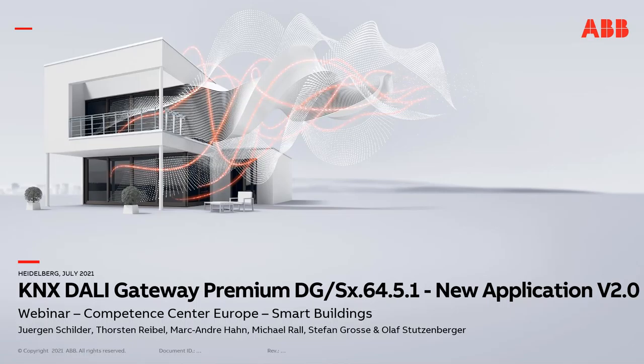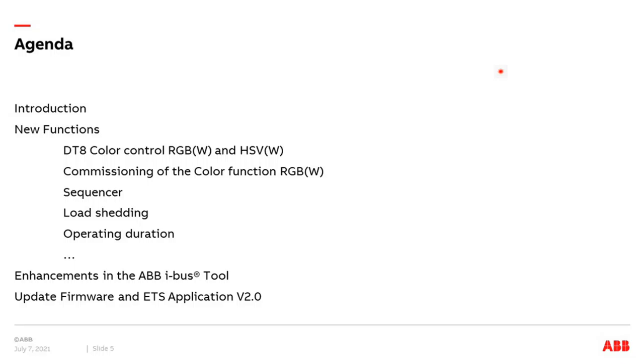Hello and welcome, Jürgen Schilder speaking. In today's webinar, I'm going to introduce the new application program 2.0 for the ABB iBus KNX-DALI Gateway Premium DGS-X6451. There is no new hardware. By updating the application program to version 2.0, new functions are available. The agenda covers: an introduction on DALI, new functions like device type 8, color control, commissioning of color control devices, sequencers, enhancements of the ABB iBus tool, and how to update the firmware and ETS application.